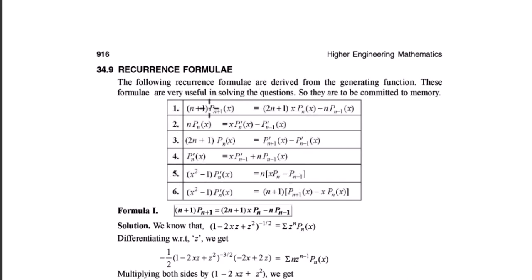The first one is: (n+1) P_{n+1} = (2n+1) x P_n minus n P_{n-1}. These six expressions, or these six recurrence relations, will be true for any value of n. Now we will try to prove these recurrence relations using Scilab. Let us move to the Scilab editor.